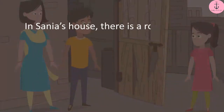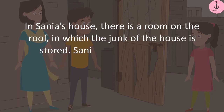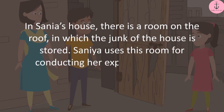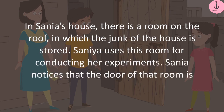In Sanya's house, there is a room on the roof in which the junk of the house is stored. Sanya uses this room for conducting her experiments. Sanya notices that the door of that room is broken.